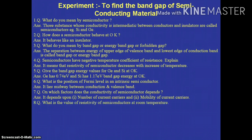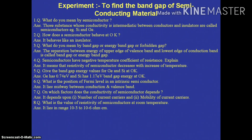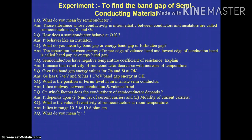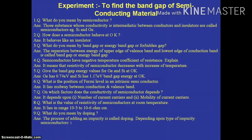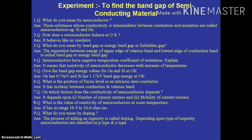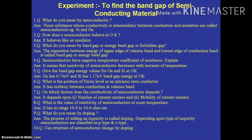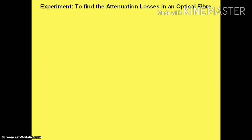On what factors does the conductivity of a semiconductor depend? It depends upon the number of current carriers and the mobility of the current carriers. What is the resistivity of a semiconductor at room temperature? It lies in the range of 10⁻³ to 10⁻⁶ ohm-centimeter. What do you mean by doping? The process of adding an impurity is called doping. Depending on the type of impurity, semiconductors are classified as P-type and N-type. Can the structure of a semiconductor change by doping? No, the structure cannot change, but conductivity is largely affected.